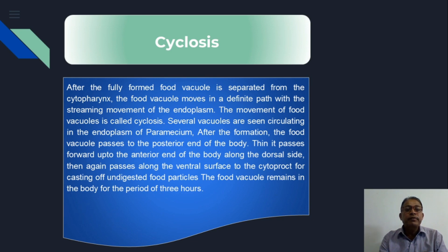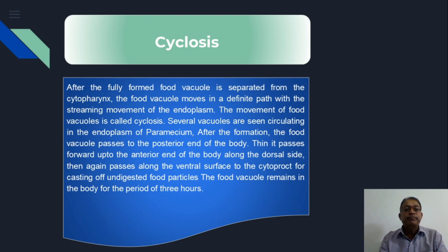The endoplasm circulates within the body, and the movement of the food vacuole is called cyclosis. During the food vacuole's tour within the body — moving downward, anterior upward, right side, left side — the food within the food vacuoles gets digested. Several vacuoles are seen circulating in the endoplasm of Paramecium.